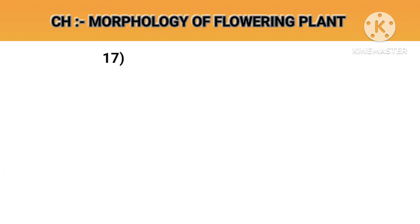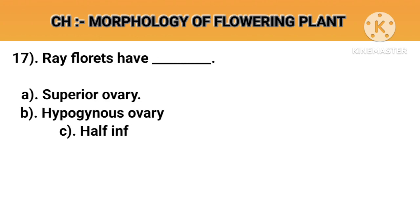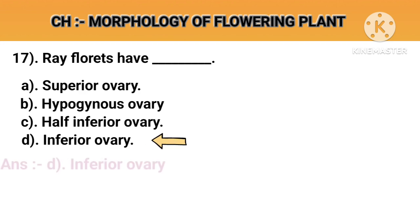Question number 17. Ray florets have. Option A: Superior ovary. Option B: Hypogynous ovary. Option C: Half inferior ovary. Option D: Inferior ovary. Answer D: Inferior ovary.